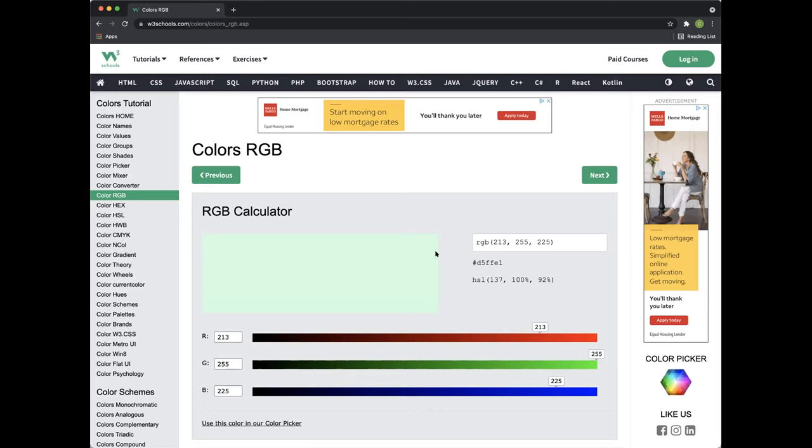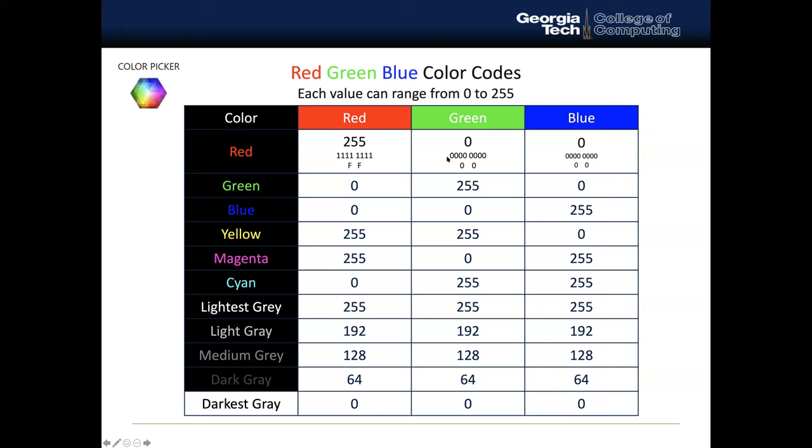And then we can increase the red to make it more of a teal or light green color. There are different ways in which you can just play around with the colors. And that's an exercise that you can do on your own to see how changing the values for RGB will affect the actual color that comes out.